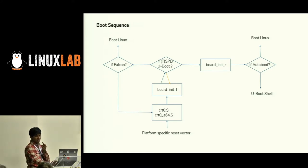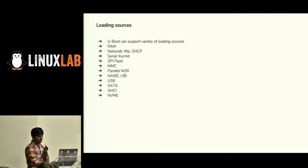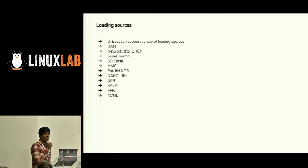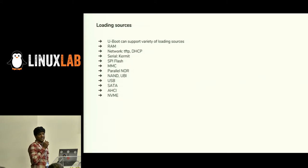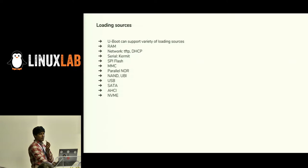Once it finds UBoot, it can either drop to the UBoot shell for user interaction with commands or boot Linux directly. Loading stages: there are many ways to load an image in UBoot. It can be a flash variant, SATA, and all the storage media available in the market — those are supported in UBoot. You can use network or serial as a loading source as well.